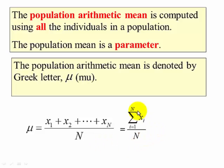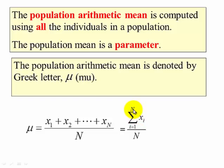This is the mathematical notation for sum. We're summing up all the x values — the observations — starting with one and going all the way to n, and we divide it by n. That is the mean.